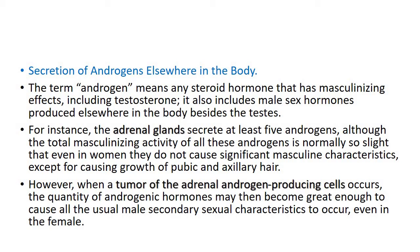Androgen does not refer to any single hormone; it is a collective term for male sex hormones. Androgens basically refer to any steroid hormone that has a masculinizing effect, like testosterone. This also includes other male sex hormones produced elsewhere in the body besides the testes. For example, the adrenal gland secretes at least five androgens, although their total masculinizing activity is normally very slight, except for causing growth of pubic and axillary hair.